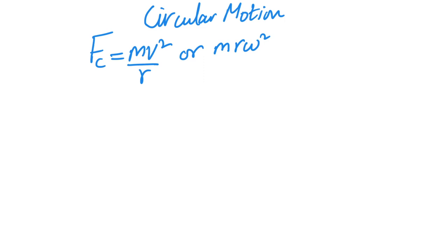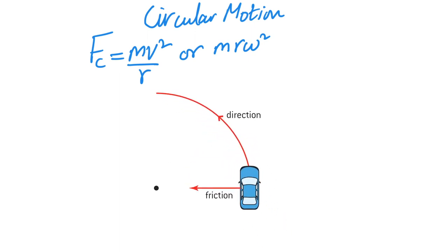Centripetal force itself is nothing, but it is due to some other force. Now it could be different in different scenarios. For example, let's consider a car which is moving in a circle. The car is moving in a circle and you can clearly see the direction — it's turning left. Now why is the car turning left? What is causing it to turn left? The answer is: this friction force here is providing the centripetal force.